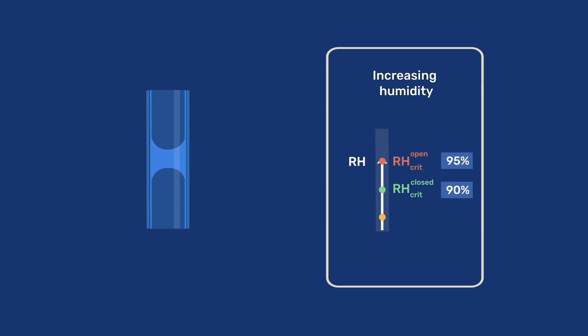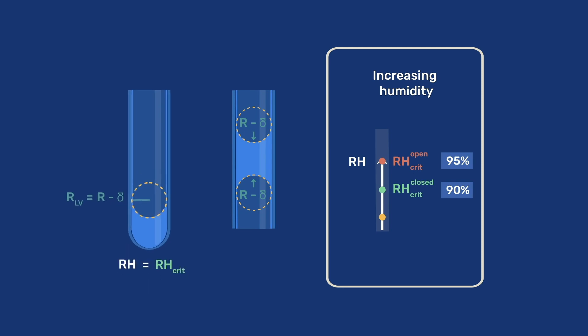Condensation will occur when the humidity reaches RH CRIT open, resulting in a droplet with menisci having a curvature 2 over R minus delta, just as in the case of the close-ended tube. That droplet would be in equilibrium with RH CRIT closed, which is lower than RH CRIT open, so the existing relative humidity is supersaturated with respect to the droplet, and the tube fills spontaneously.